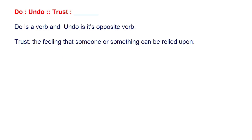It is given that 'do is to undo,' and we have to find a similar kind of relationship between 'trust' and the missing word. We know that 'do' is a verb and 'undo' is its opposite. So first, let's understand the meaning of 'trust': trust is the feeling that someone or something can be relied upon.